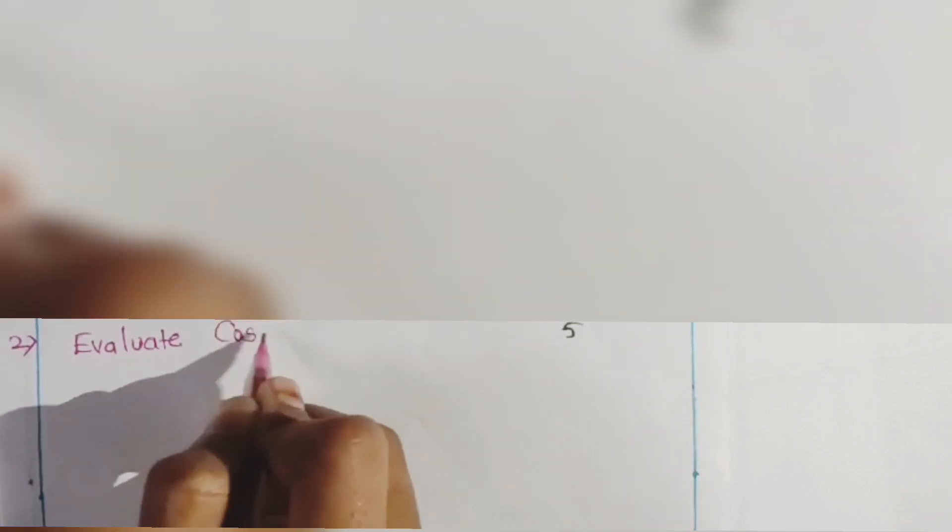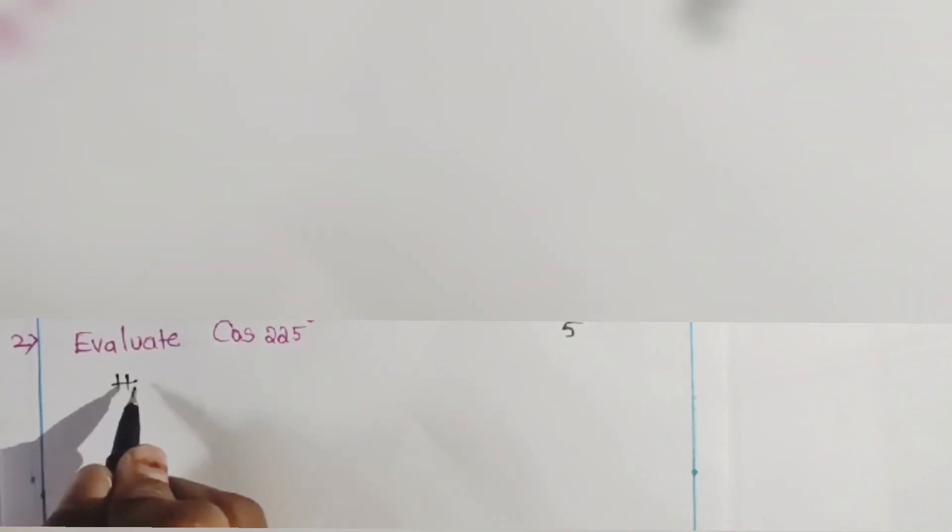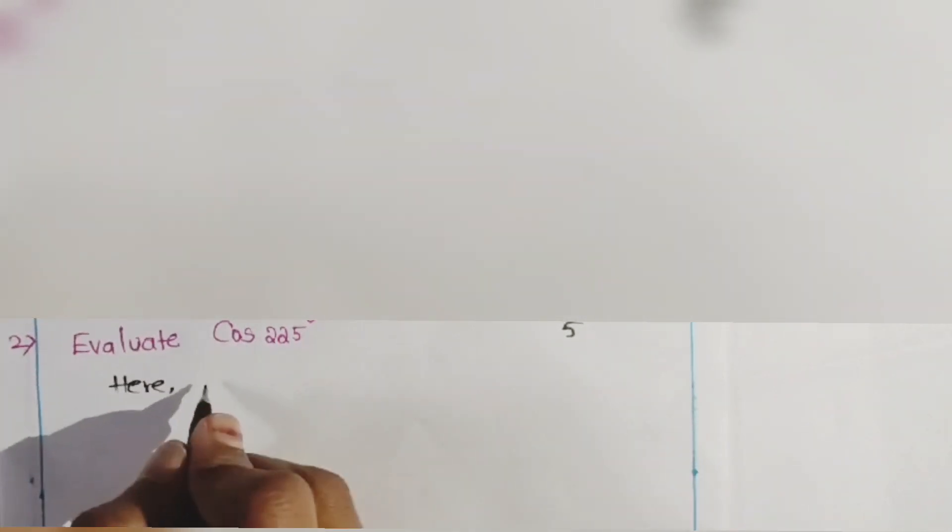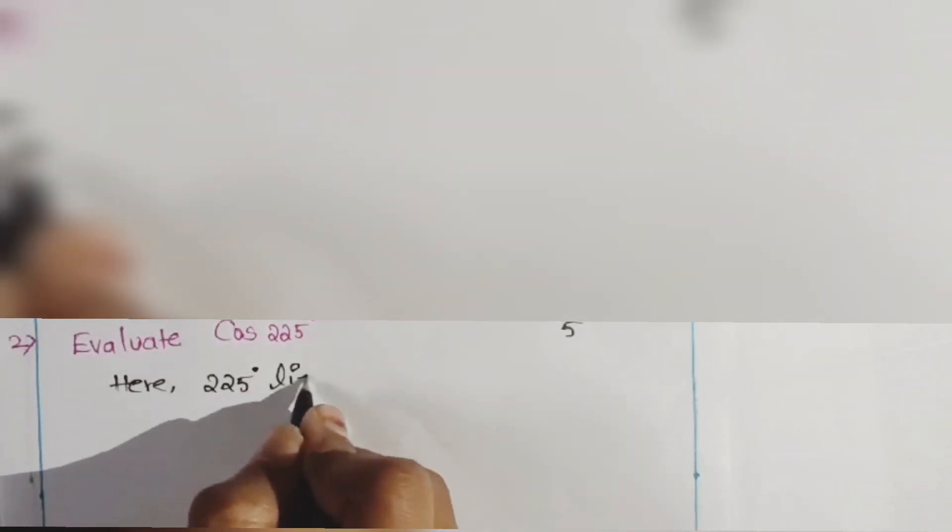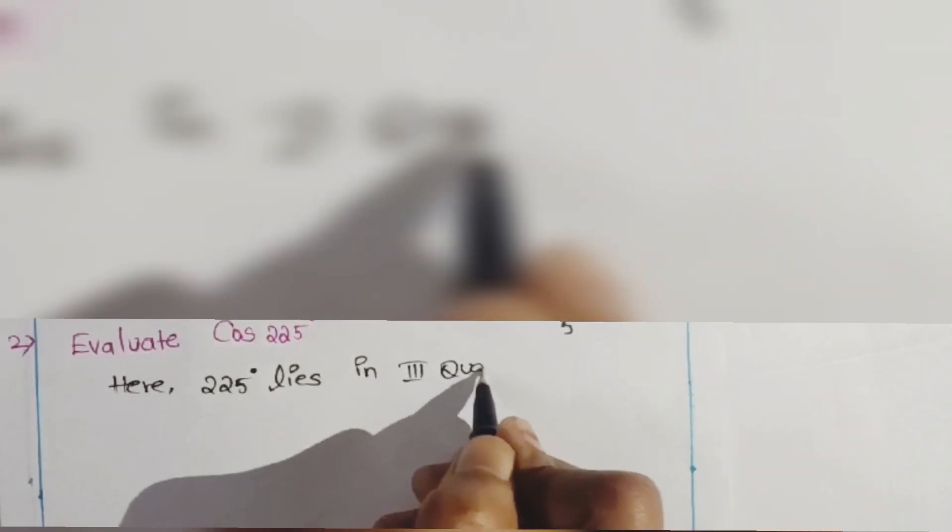Hi friends, in this session we will solve this question. Earlier I have discussed a topic called quadrants, where I clearly mentioned what quadrant comes under what degrees and all. So here they are asking cos 225°. 225 lies in the third quadrant, clearly.